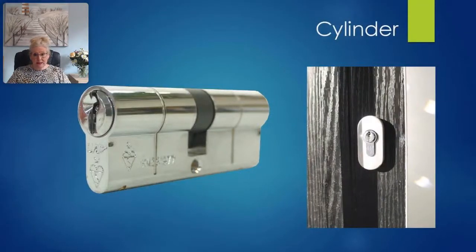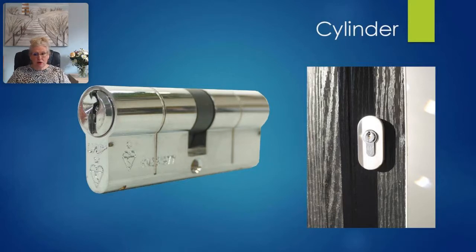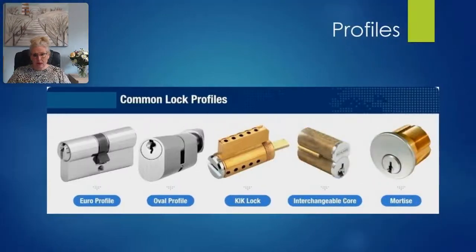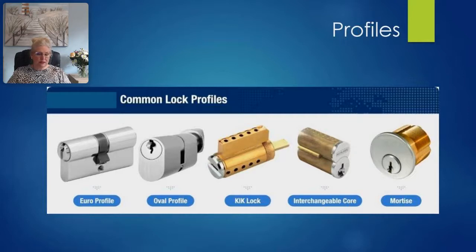A cylinder — what many people refer to as a lock — is actually called a cylinder or sometimes a barrel. It is the locking mechanism within the door and the device where you insert your key, used primarily to operate a lock case with a euro-shaped hole. Common lock profiles include the euro profile, which is one of the most popular. Euro profile cylinders are predominantly used in multipoint locks. Other cylinder styles are round or oval in shape.